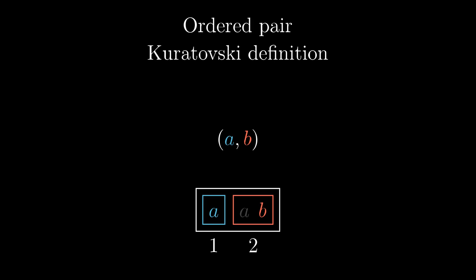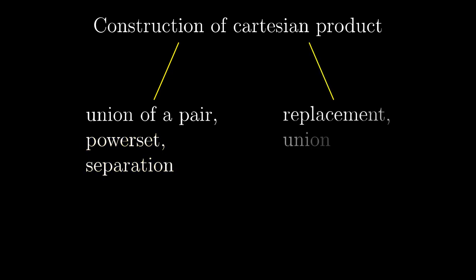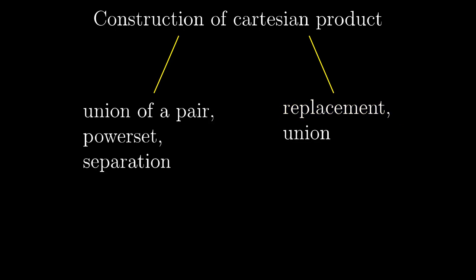In the end, we are going to do a little exercise with axioms and construct the Cartesian product, the set of all the ordered pairs with elements from some given two sets. We are going to look at two constructions. One construction using brute force to demonstrate that you can construct almost anything with power set and separation. And then another construction with a nice application of the axiom of replacement. Let's go.